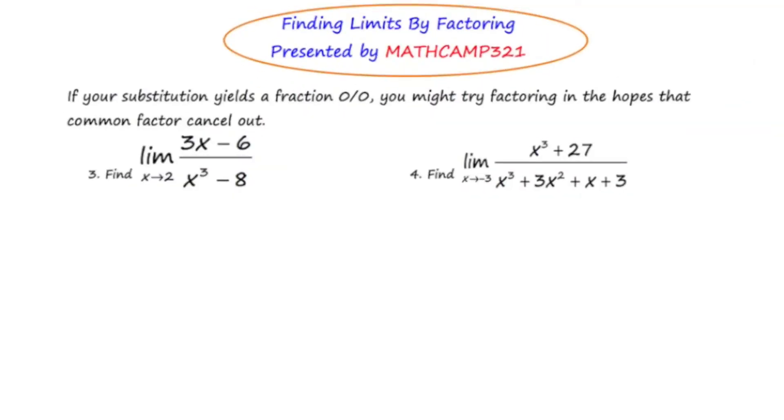In number 3 we're asked to find the limit of the rational function 3x minus 6 over x cubed minus 8 as x approaches 2. Let's start by using direct substitution and see if that works. So let's plug in 2 wherever we see an x. Now looking at the numerator, we end up getting 3 times 2, which is 6, minus 6. Well, that's not looking good already. Downstairs, or in the denominator, we have 2 cubed, or 8 minus 8, and that's not good either. So we end up with 0 over 0, which is not a good thing when you're using direct substitution. It means you've got to try something else.